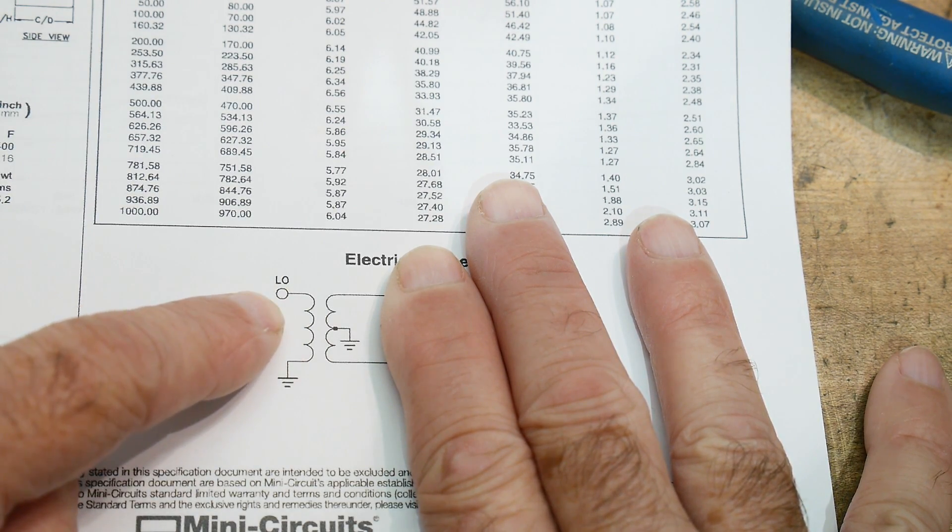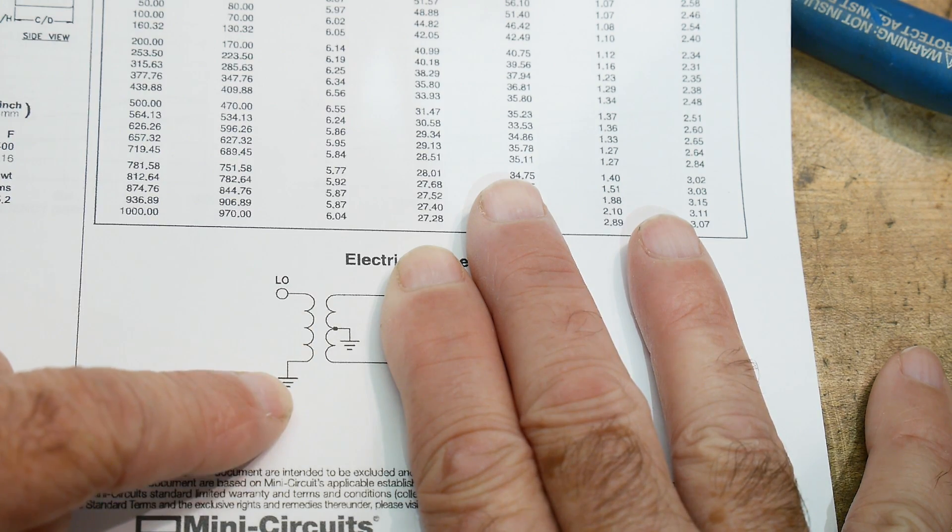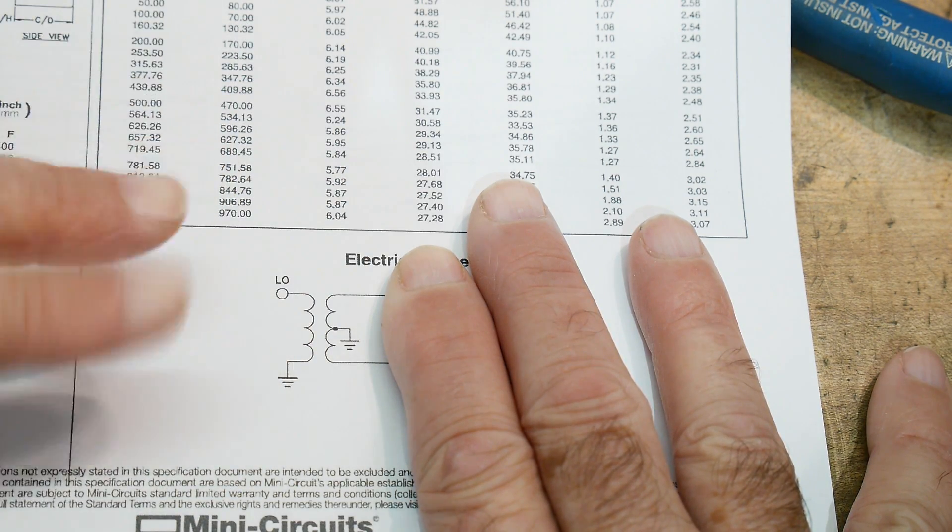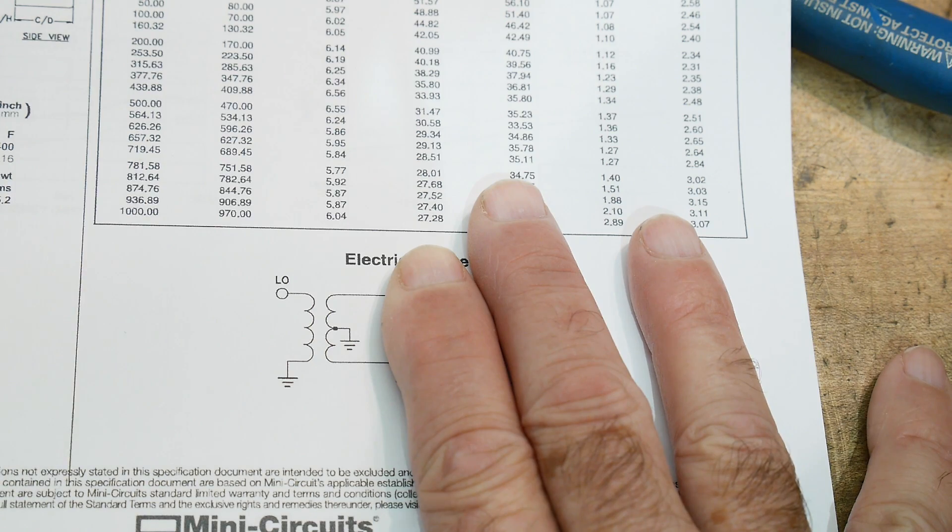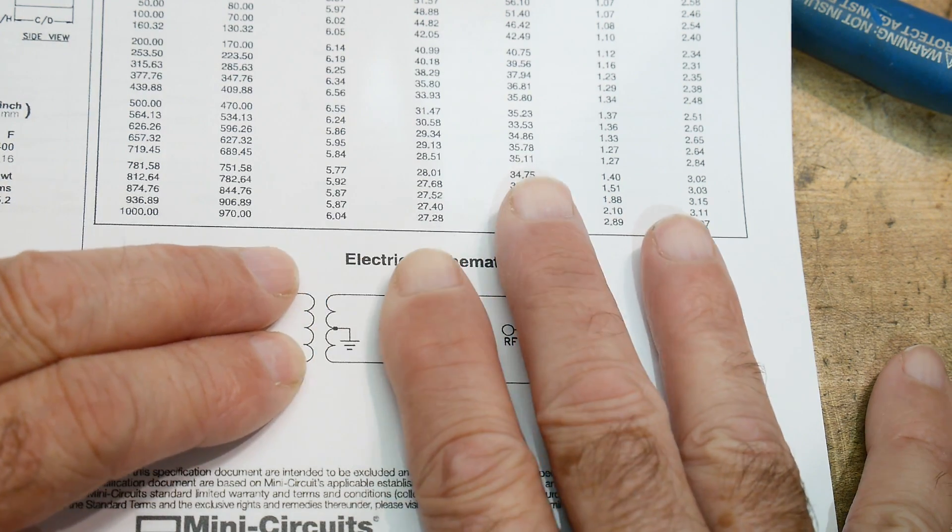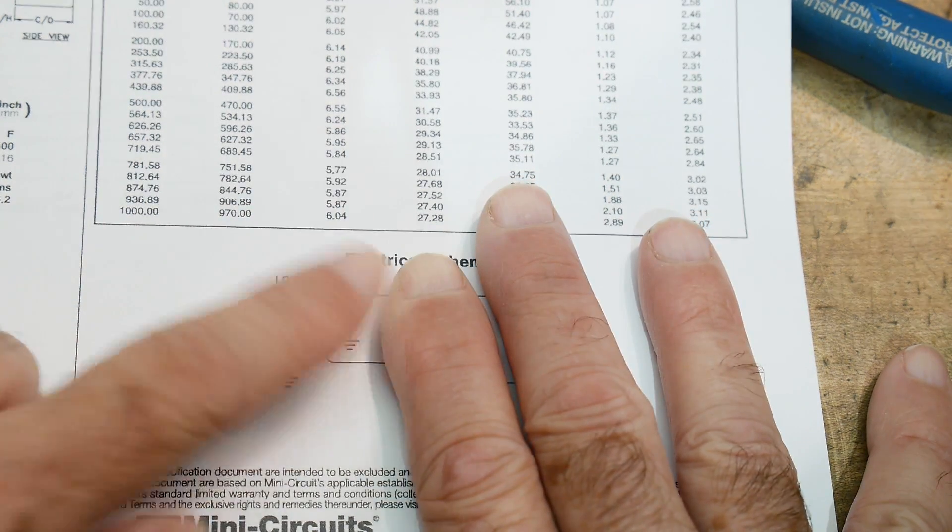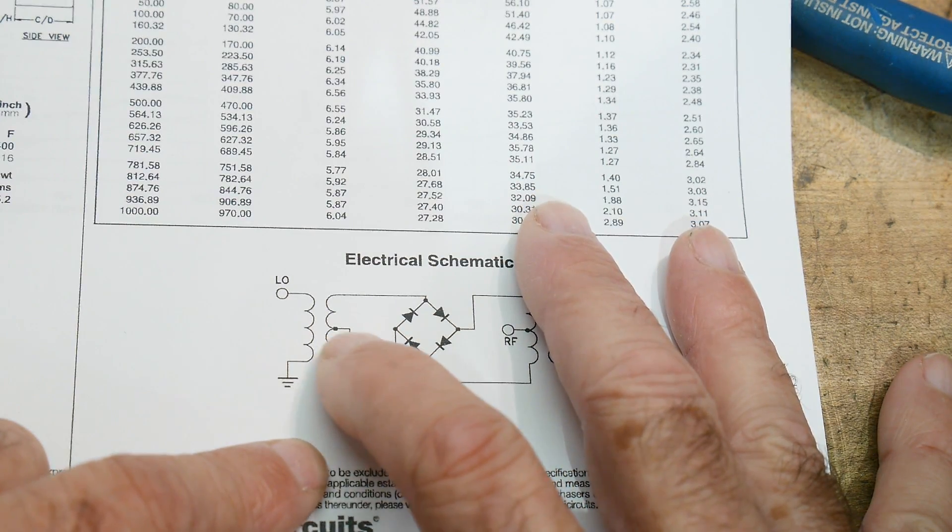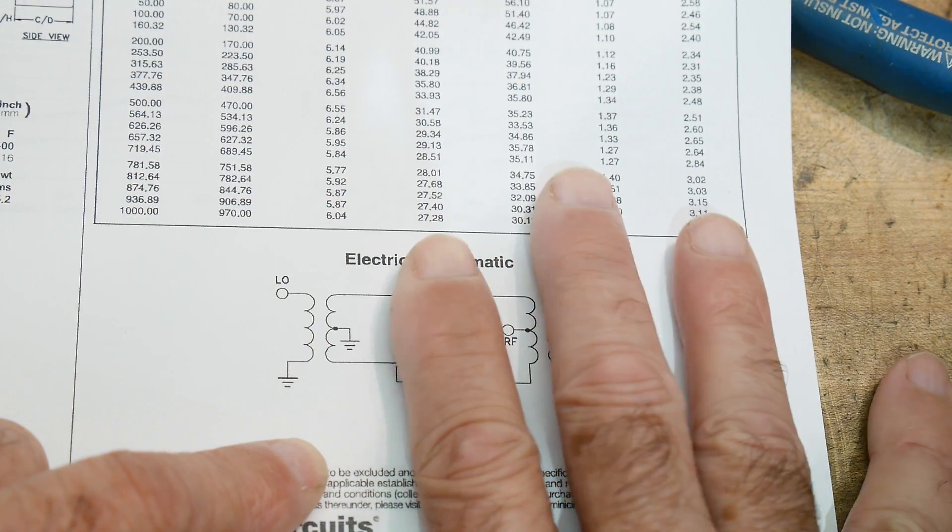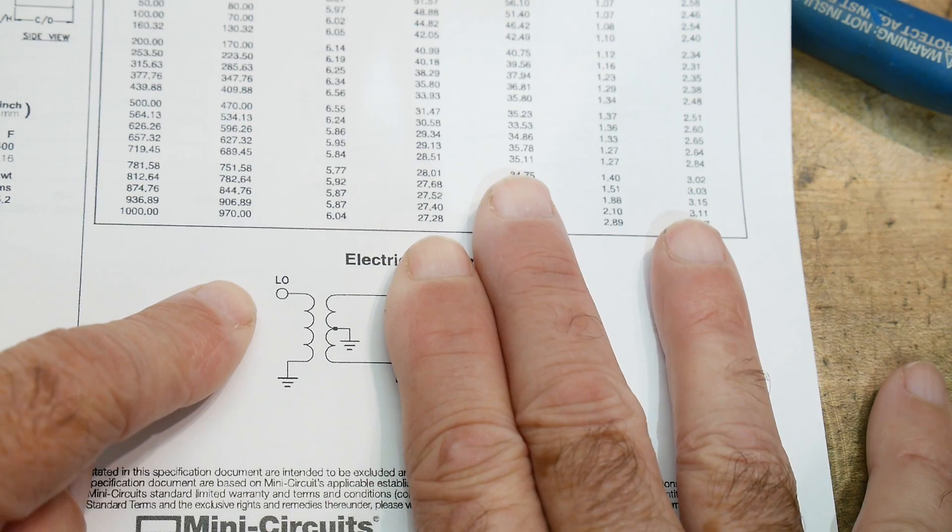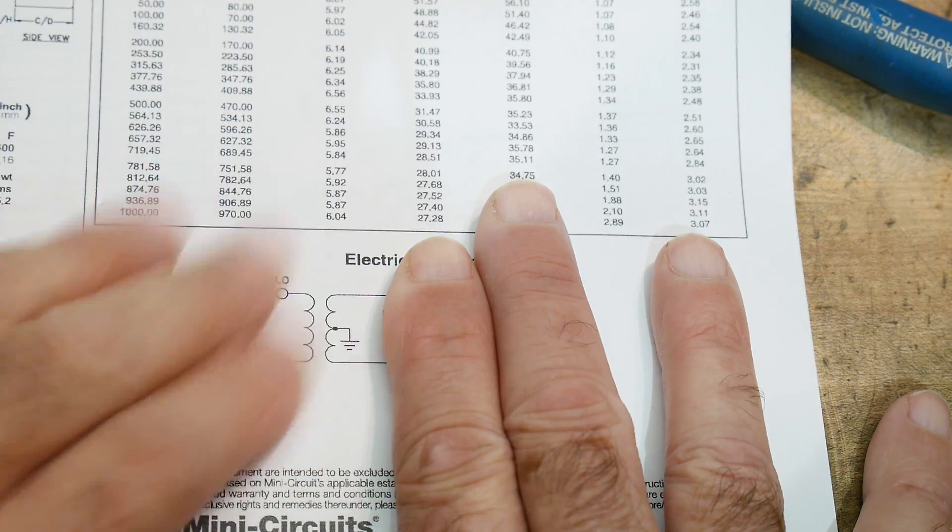On this side though, it gets transformed into a balanced, so you have a center tap that's grounded and then you have plus or minus signals on the output. So unbalanced on this side, balanced on this side. So it balances it.